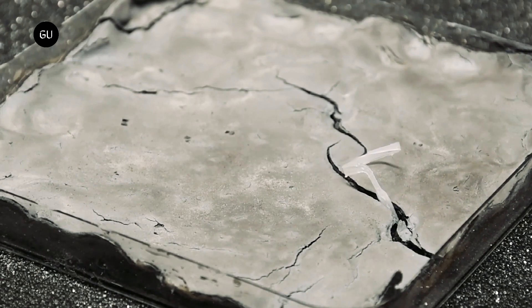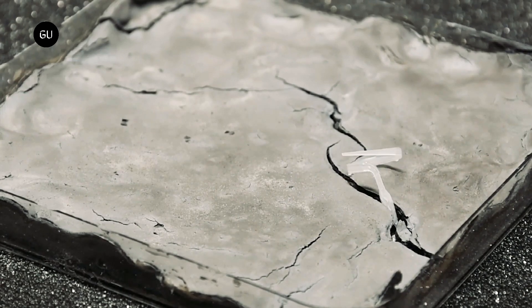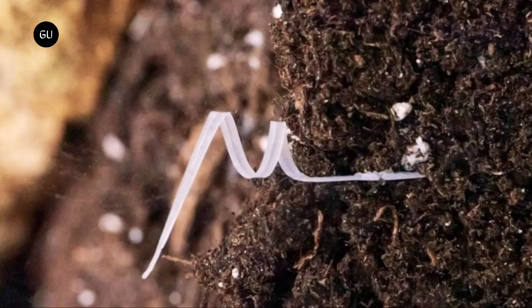These seeds move independently to explore and penetrate the soil, increasing the likelihood of germination. The researchers precisely replicated the seed's natural ability to create an artificial robot.